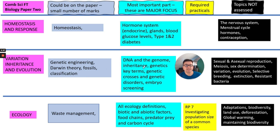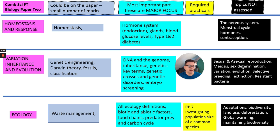For Variation, Inheritance and Selection, you still need to know about the structure of DNA and the genome, you need to be able to do inheritance — so genetic terms, some crosses using Punnett squares, genetic disorders such as polydactyly and cystic fibrosis, and embryo screening. There's still a lot not there, but as a minor focus you do still need to understand Darwin's theories, and you need to understand fossils and classification.